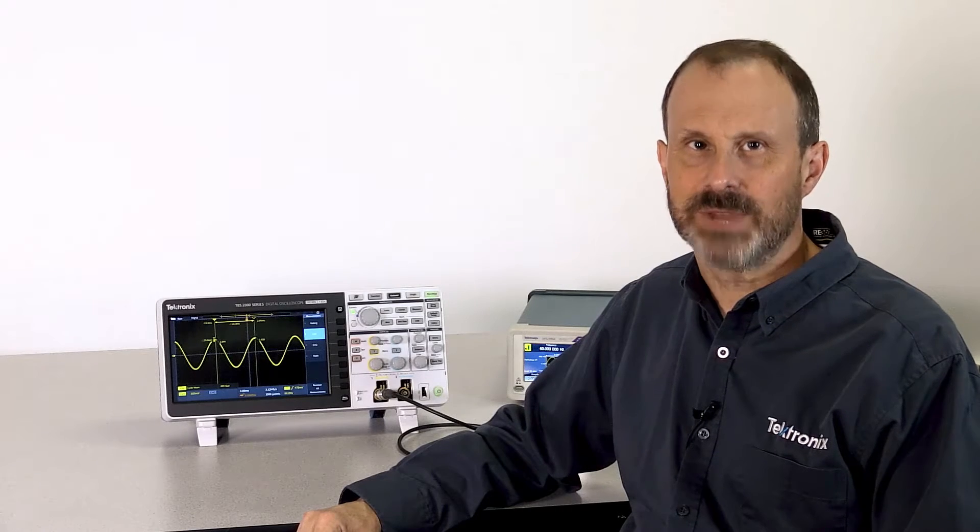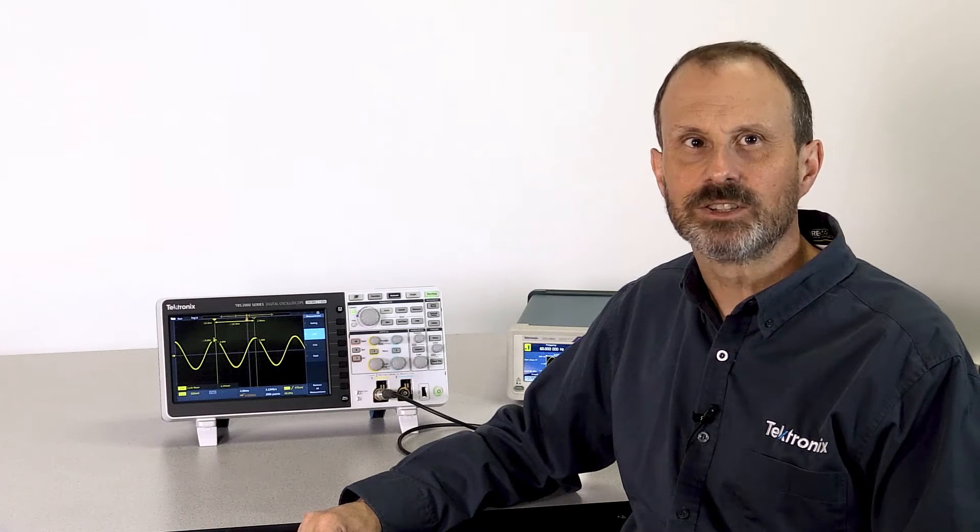I'm going to start with the mean measurement, but before I show you how to make the measurement, let's take a look at how this measurement works. The math the scope does to measure the mean value of the waveform is pretty straightforward. The mean value, or average, is computed by summing the value of each point and dividing by the number of points.